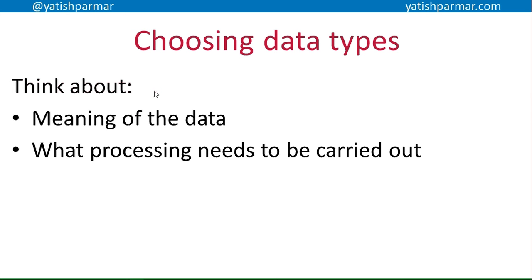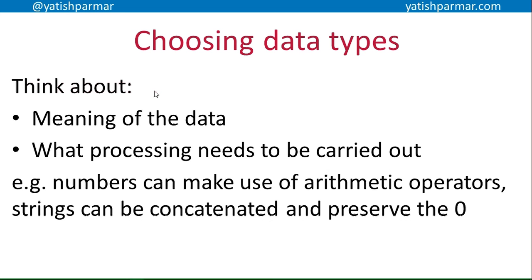You also need to think about what processing needs to be carried out. Say you found a magic way to store that leading zero as an integer, and then you wanted to add a +44 international dialling code at the beginning. If you try to do 44 plus your integer telephone number, you'll end up with a value 44 higher than the previous one — not what you want. Whereas if you stored it as a string, you can concatenate strings, preserve the zero, and so on. So by choosing a data type you're deciding what operations are available: numbers use arithmetic operators, strings can be concatenated and you can use substring functions like mid, left, right, etc.